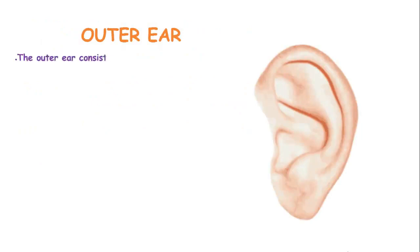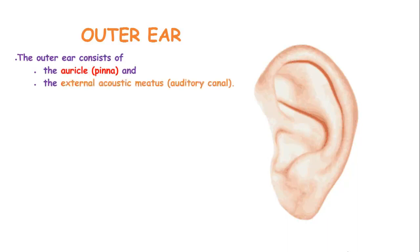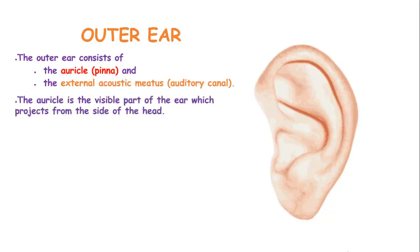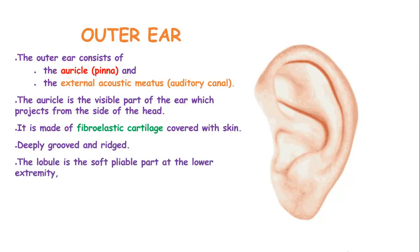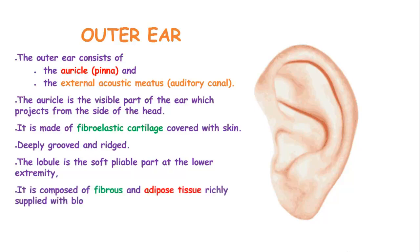The outer ear consists of the auricle or the pinna and the external acoustic meatus, known as the auditory canal. The auricle is the visible part of the ear which projects from each side of the head, and it is made of fibroelastic cartilage covered by skin. The lobe is the soft, pliable part of the lower extremity and is composed of fibrous and adipose tissue richly supplied with blood.